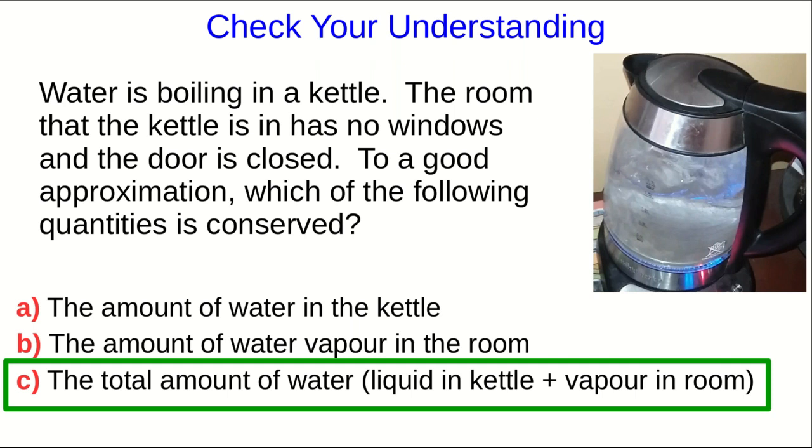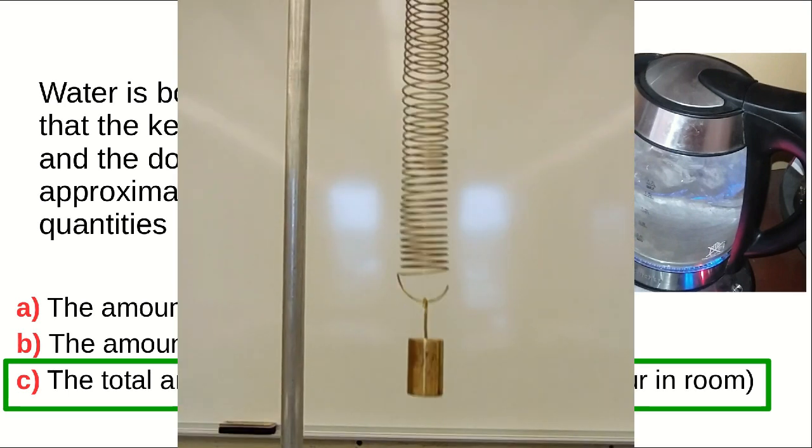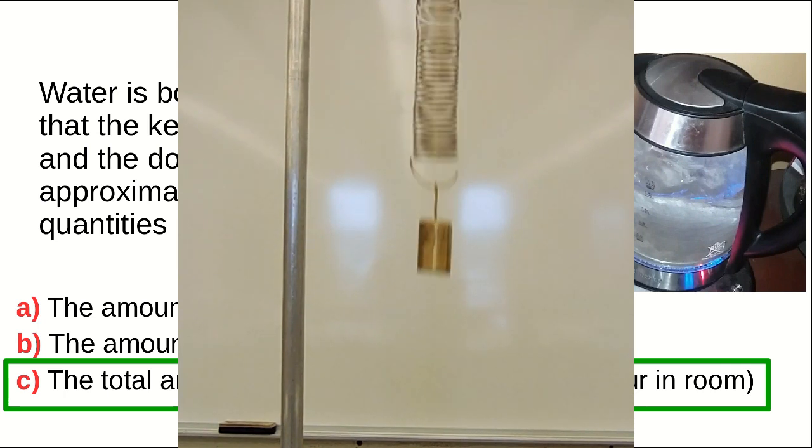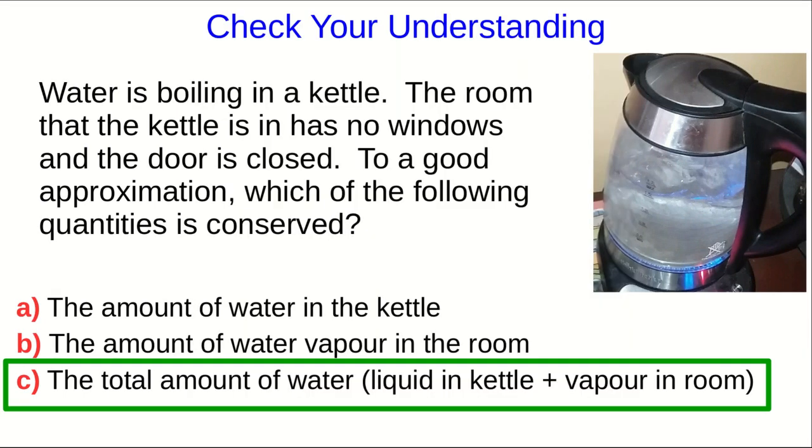This illustrates something that's generally true about conserved quantities. It's not that the momentum or energy of individual objects or of systems is always conserved. It's that when those quantities change, it's because they've been transferred from one thing to another. For example, when you have a mass oscillating up and down on a spring, and you reach out and grab it, its energy decreases. But that seemingly lost energy hasn't disappeared, it's just been transferred from the mass to you.